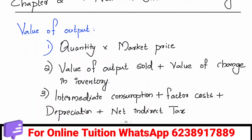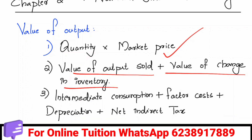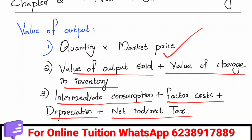In the first equation, we have the equation for value of output. There are three equations of the value of output: 1. Quantity into market price. 2. Value of output sold plus value of change in inventory. 3. Intermediate consumption plus factor cost plus depreciation plus net indirect tax.